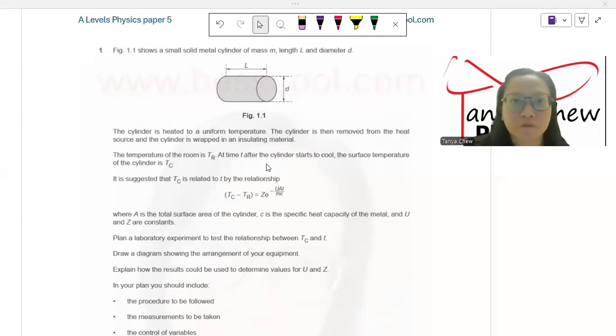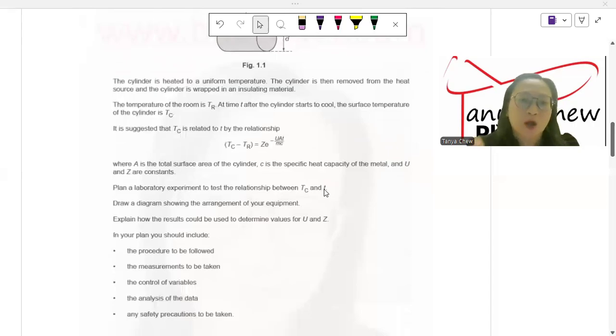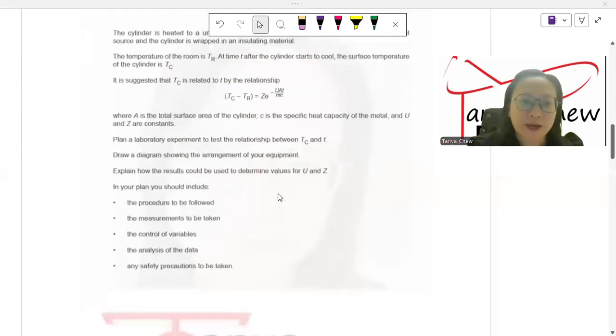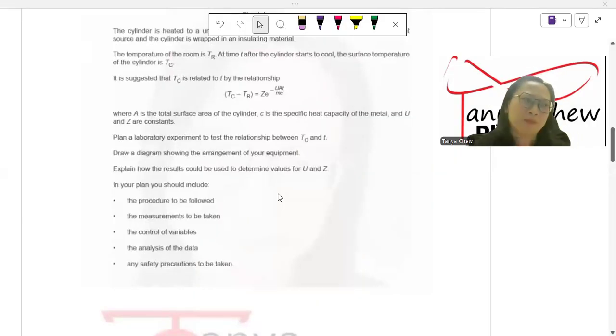So you have to plan a laboratory experiment to test the relationship between TC and T. TC is the surface temperature of the cylinder, and T is the time taken for the cylinder to cool. Now, draw a diagram showing the arrangement of the experiment, and you have to explain how the results could be used to determine the values of U and Z. In your plan, you should include: the procedure to be followed, the measurements to be taken, the control of the variables, analysis of the data, as well as any safety precautions to be taken.